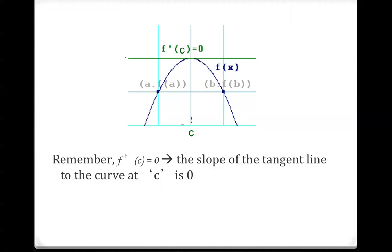Remember, f'(c) = 0 means the slope of the tangent line to the curve at c is 0. The tangent line is horizontal.